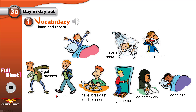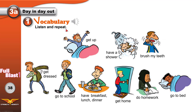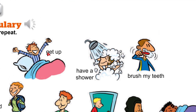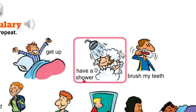3A: Day in, day out. This means something repeated every day — it happens every day. You can say: I go to school day in day out, meaning it is repeated every day.